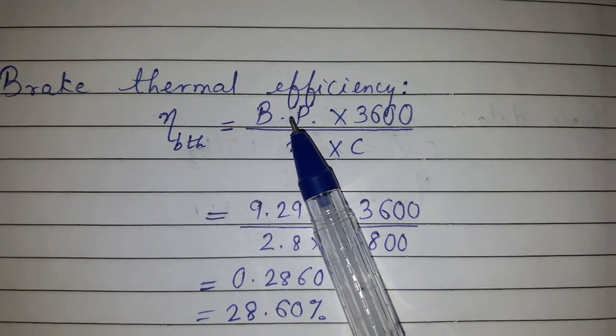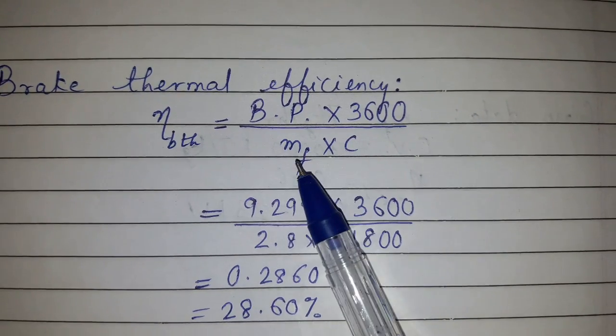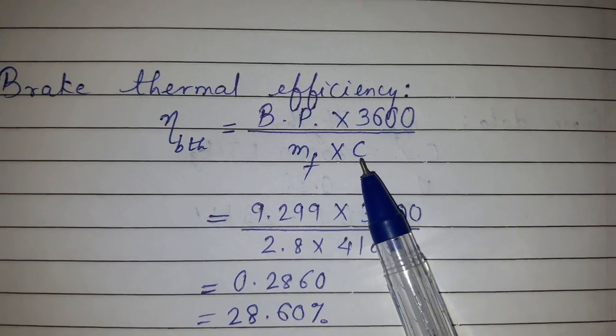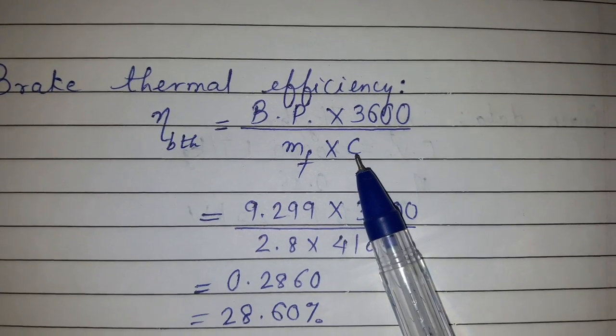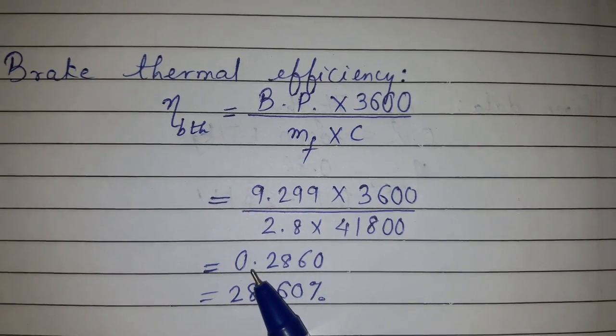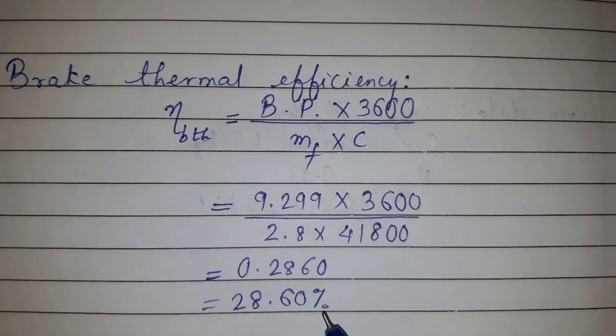BP we calculated just now which is 9.299 kilowatt, MF is given as 2.8, and C is given, that is calorific value of fuel 41,800. After putting it we got the value as 0.2860 which is 28.60 percentage.